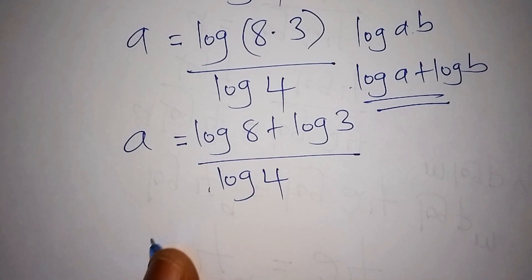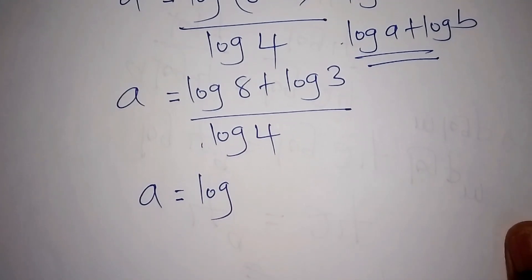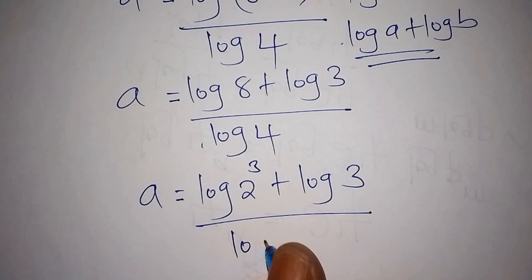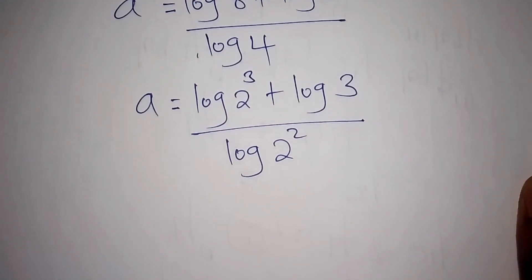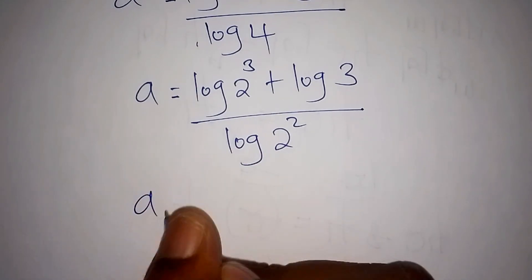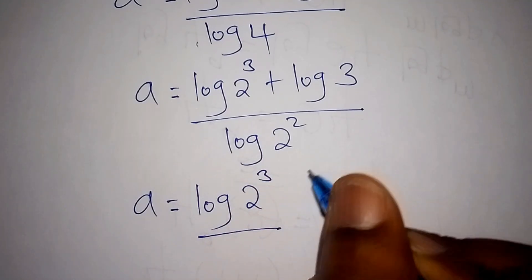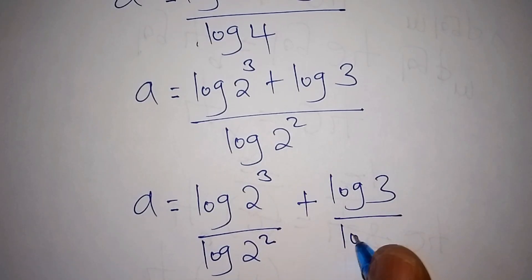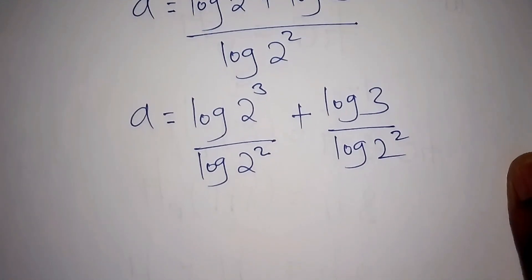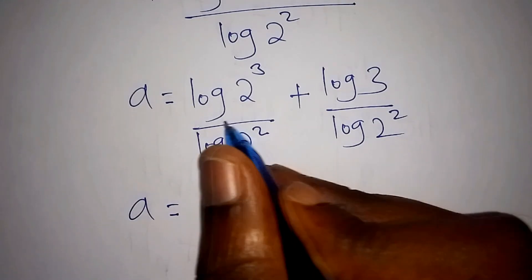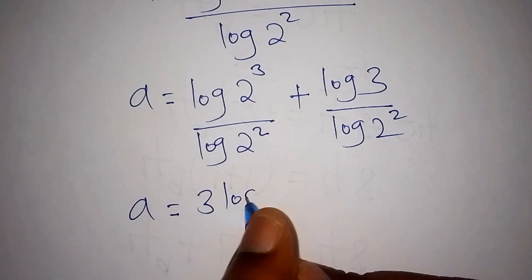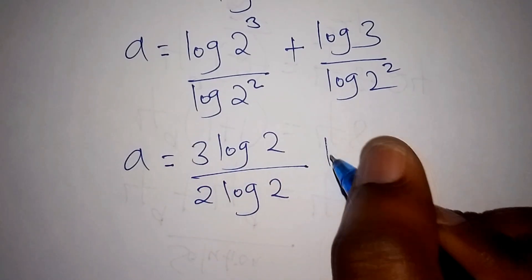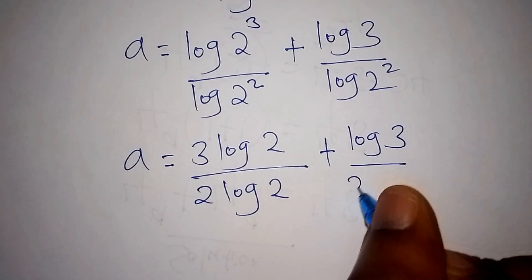So a equals: log 8 can be written as log of 2 to the power of 3, then plus log 3, all over log 4 which can be written as log of 2 to the power of 2. So we have: log(2³) over log(2²), plus log 3 over log(2²). Applying the power rule, this becomes 3·log 2 over 2·log 2, plus log 3 over 2·log 2.